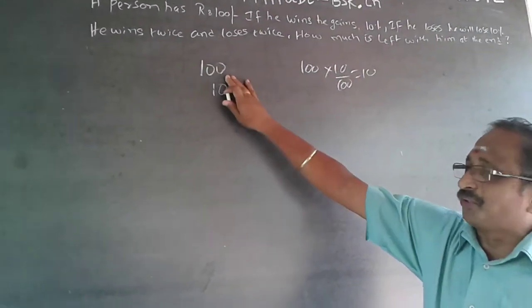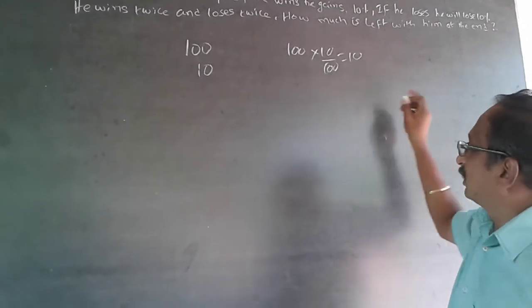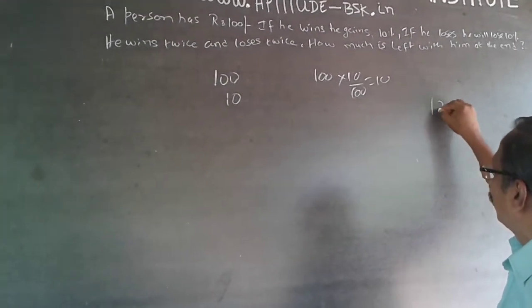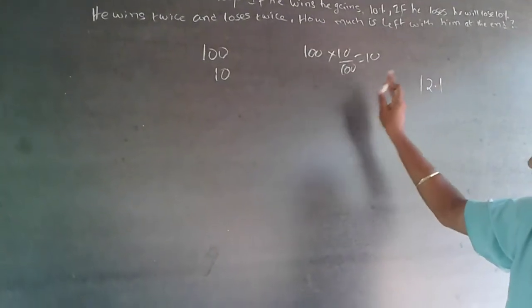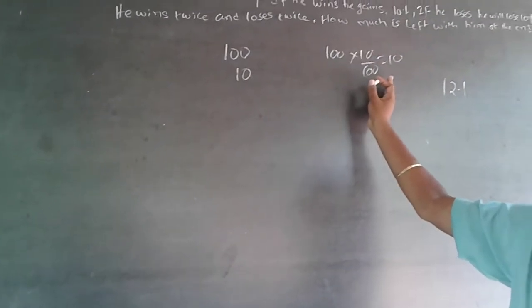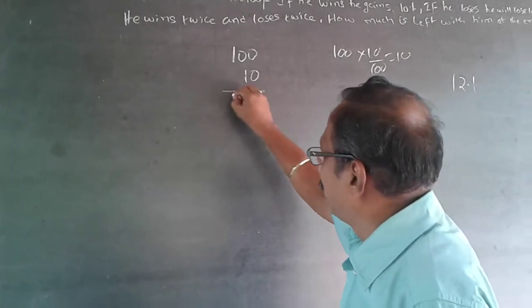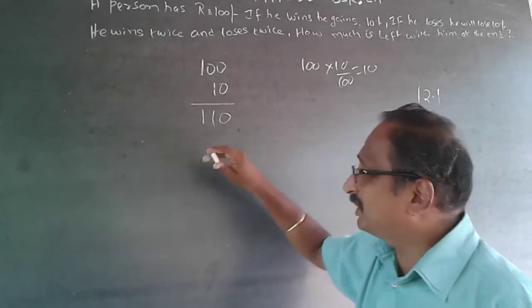The easier way of doing 10 percent: whenever I talk about 10 percent, cut one zero. If there's no zero, like for 10 percent of 121, it will be just 12.1. Don't keep on working and wasting your time. So add 10 here, this will become 110.